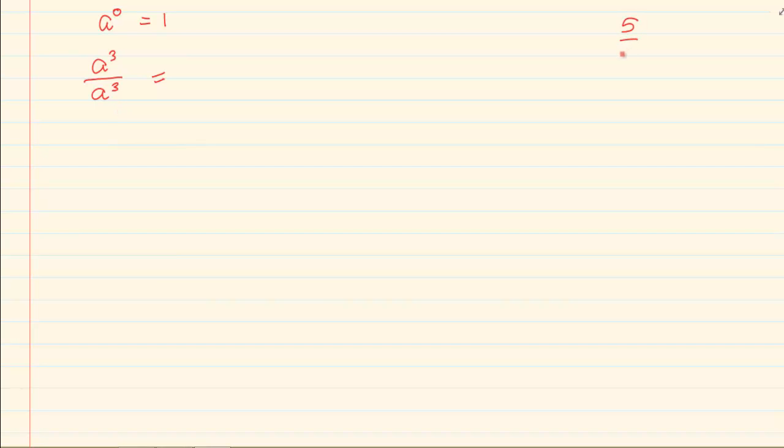So if I've got 5 over 5, it would equal 1. In this case, a to the power of 3 divided by a to the power of 3 is equal to 1.